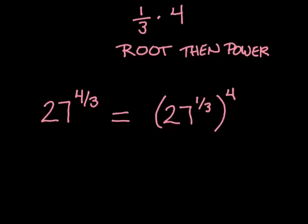we know if you have an exponent here, raised to another exponent here, you end up multiplying the exponents. And 1 third times 4 is 4 thirds.